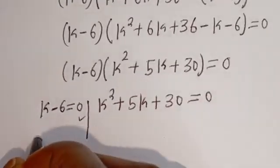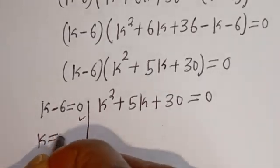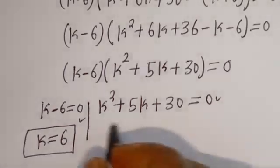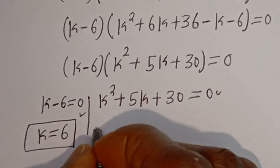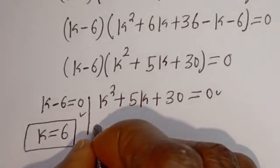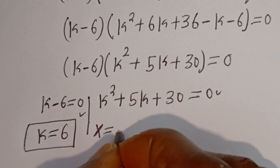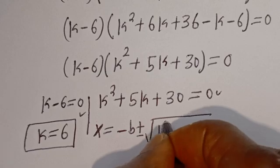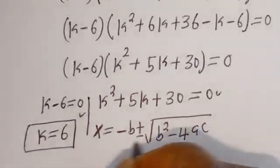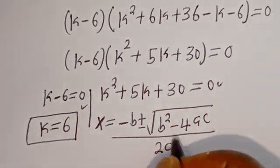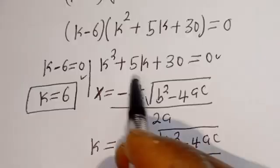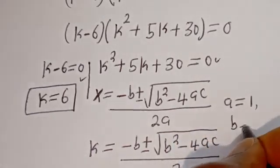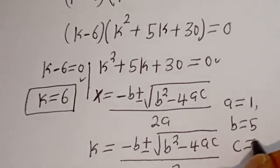Let's consider the first case: from K minus 6 equals 0, K is equal to 6. This is the first value of K. From the second case, K squared plus 5K plus 30 equals 0 — this is a quadratic equation solved using the quadratic formula: X equals minus B plus or minus square root of B squared minus 4AC, divided by 2A. Here A equals 1, B equals 5, C equals 30.